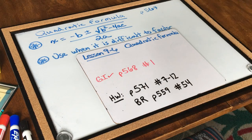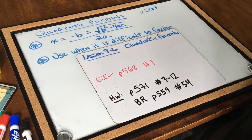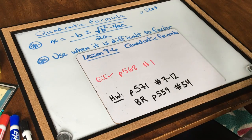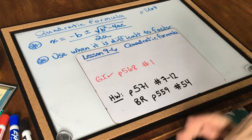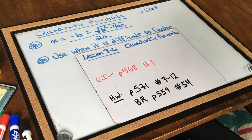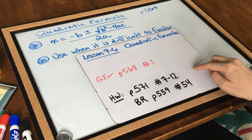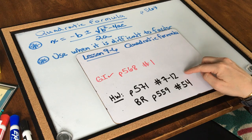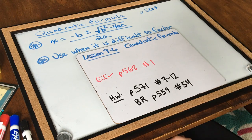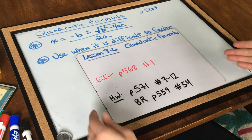Hi eighth grade. Today we're doing lesson 9-6, which is the quadratic formula, and this will be our final new lesson of the year — this will finish out your algebra curriculum for this year. Your gotta check is page 568 number 1, your homework is page 571 numbers 7 through 12, and your bell ringer is page 559 number 54.